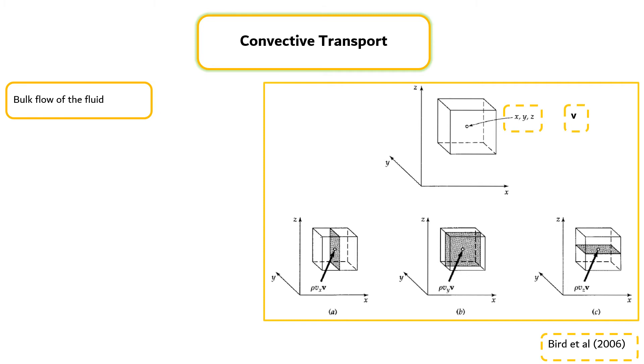The volume rate of flow across the shaded unit in A is v_x. This fluid carries a momentum ρv per unit volume. Hence, the momentum flux across the shaded area is v_x ρv. Note that this is the momentum flux from the region of lesser x to the region of greater x.